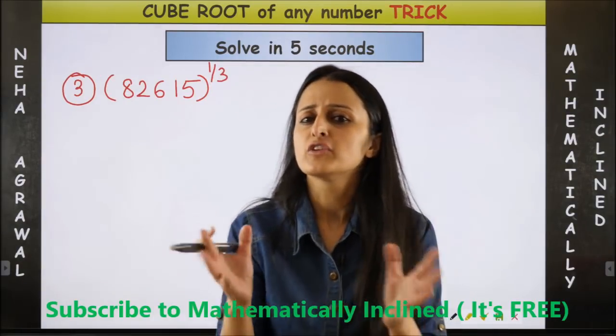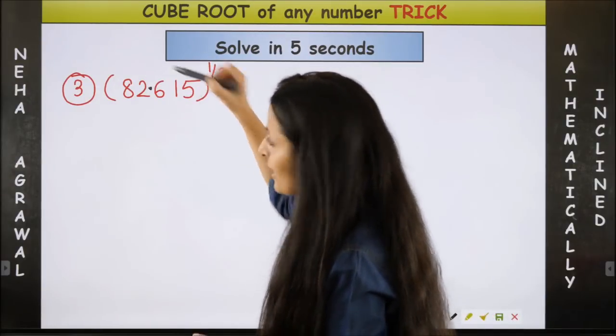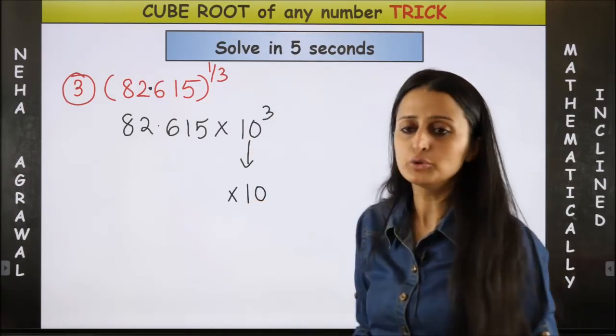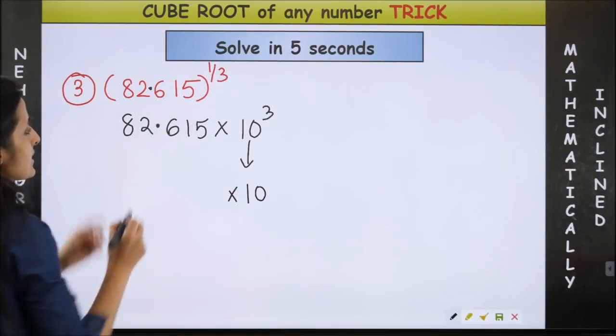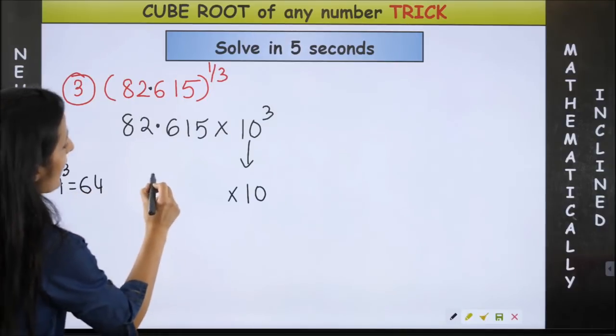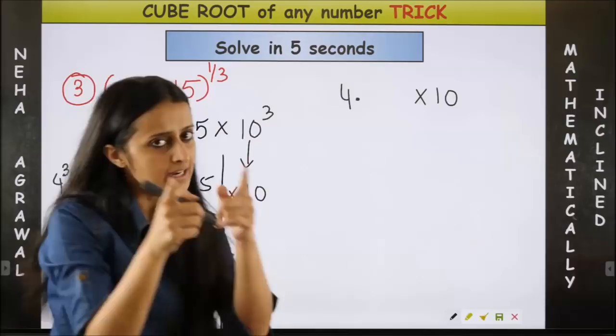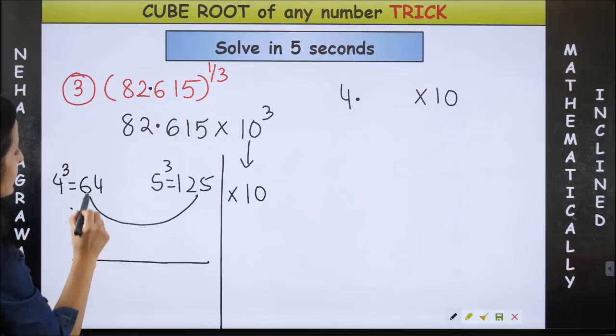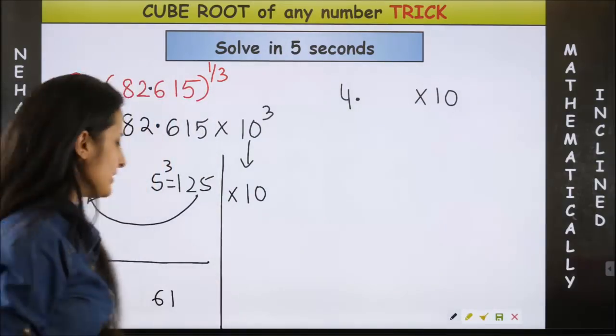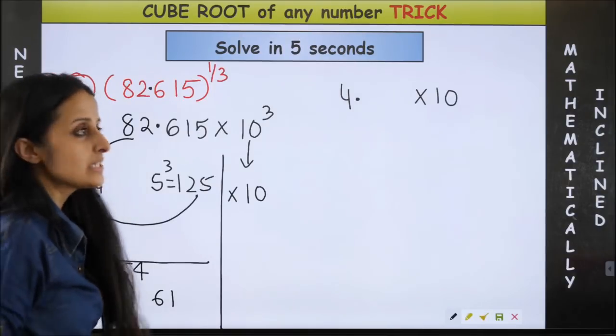Let's challenge ourselves further and see how this technique works for a five-digit number. Again, the same story: put a decimal after three places, so this will become 82.615 into 10 cube, meaning we know that in the end we have to do into 10. Now just focus on this. Now just try to recall, 82 will lie between which two cubes? It is simple: 4 cube, which is 64, and 5 cube, which is 125. So your answer is going to be 4 point something into 10. Let's find that something. So in the base you are going to do 125 minus 64, which is going to give us 61. And we have to take 90 percent, so roughly 54.